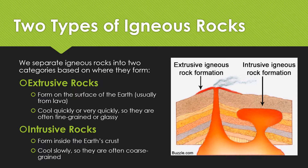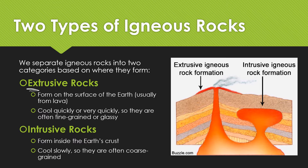There are two main types of igneous rocks based on where they form: extrusive or intrusive. Think of intrusive like someone being intrusive in your life — trying to get into your personal space. Intrusive rocks form inside the earth's crust and are usually coarse-grained because they cool very slowly in the warmer interior. Extrusive rocks — the prefix 'ex' means out — form on the surface of the earth, usually because of lava, and cool quickly or very quickly, so they're often fine-grained or glassy.